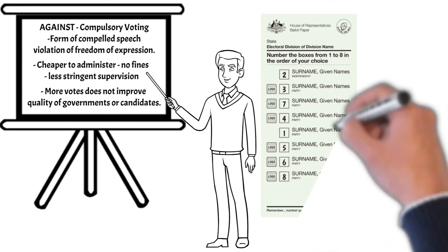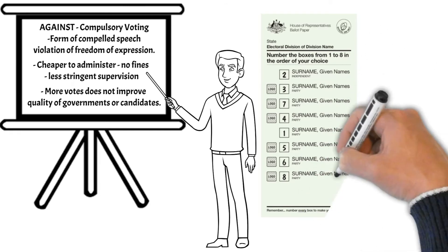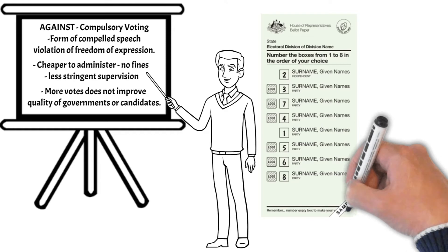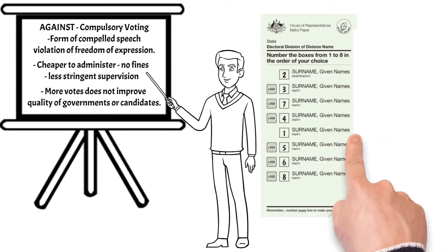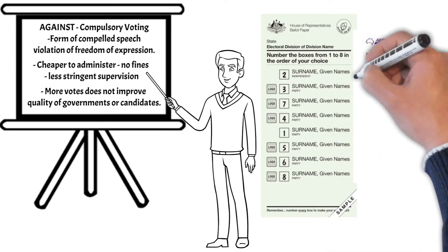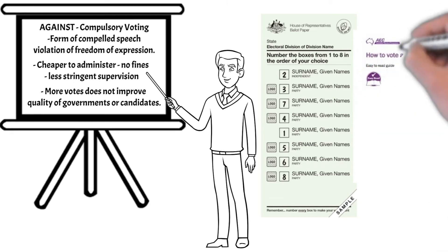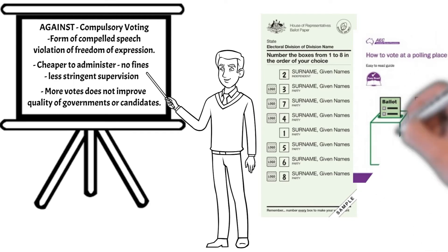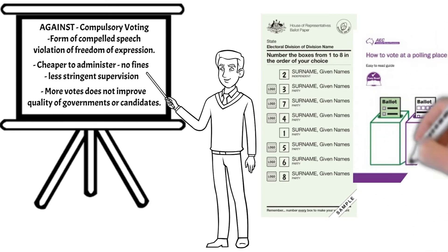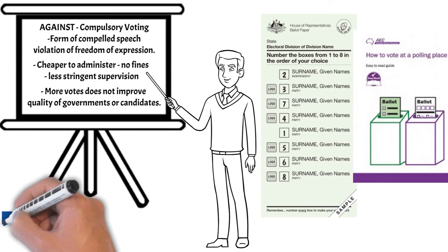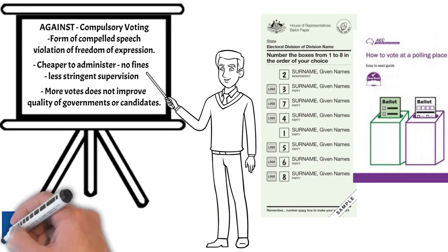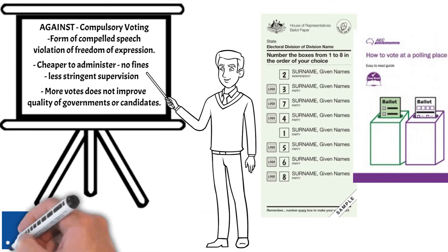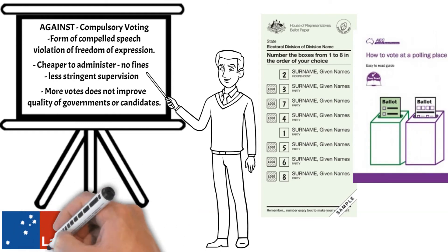An interesting side note about the two-party preferred system: compulsory voting, regardless of the arguments, is very unlikely to ever be removed from Australia. This is because both major parties receive money from the Australian Electoral Commission — funded by the taxpayer — for each vote they receive. If both major parties support an existing policy that they both benefit from, why would they strike it down? The current rate is $2.62 per vote, and just over $62 million was distributed after the 2016 election.